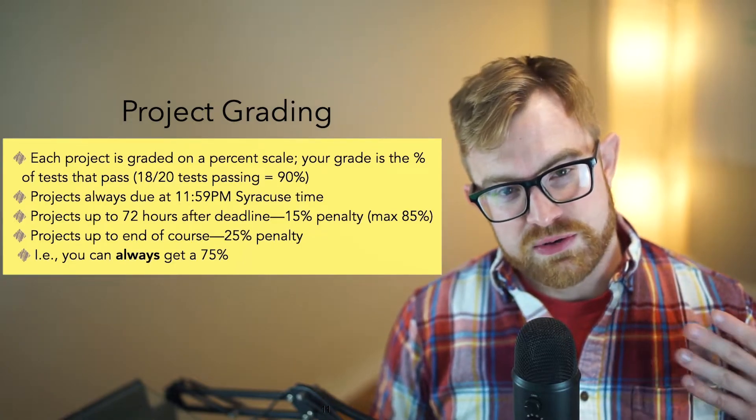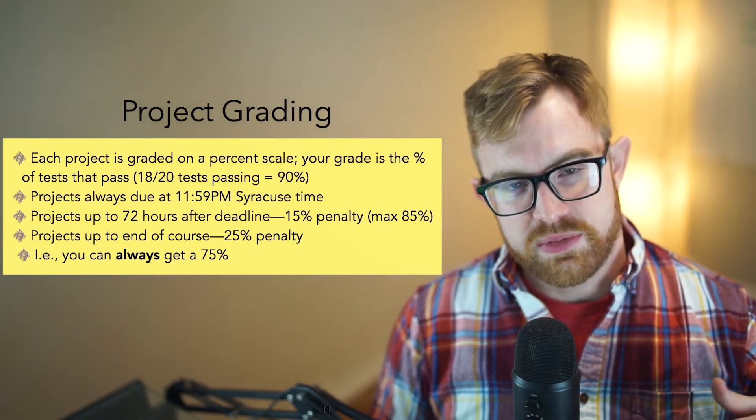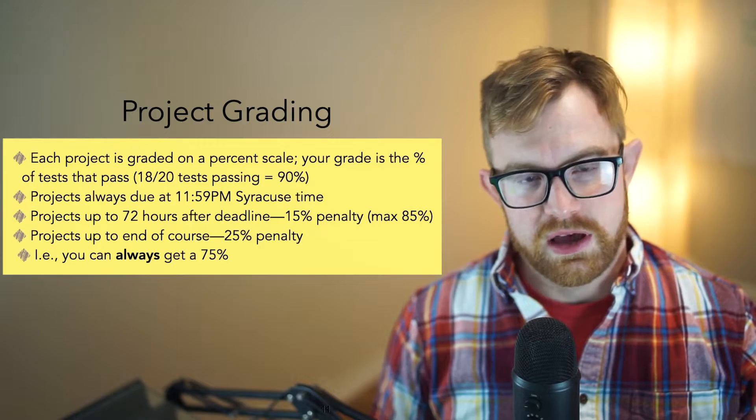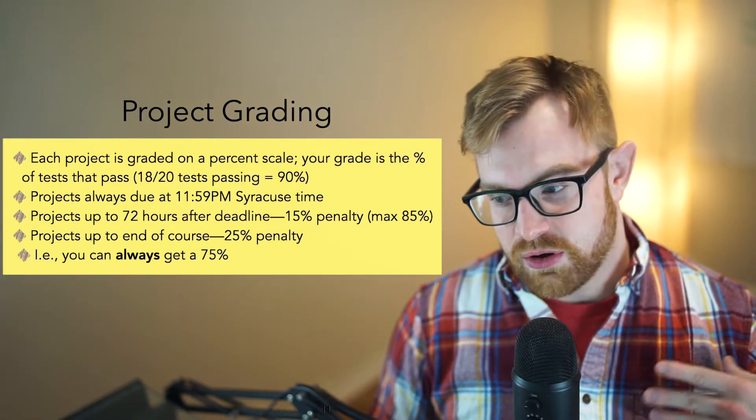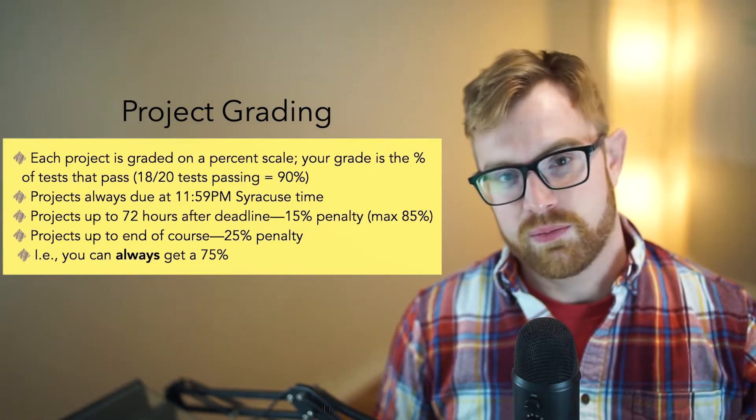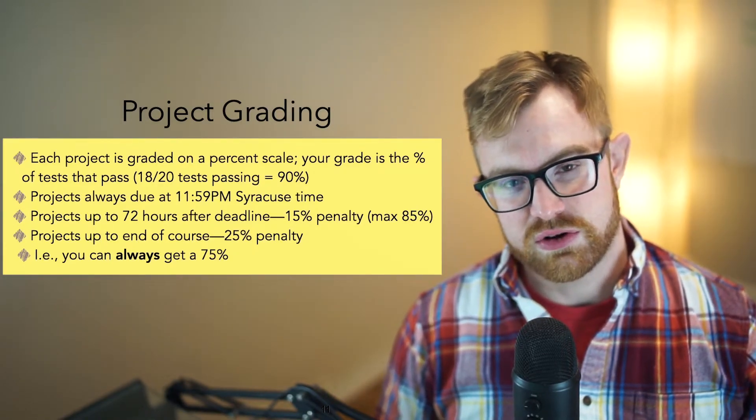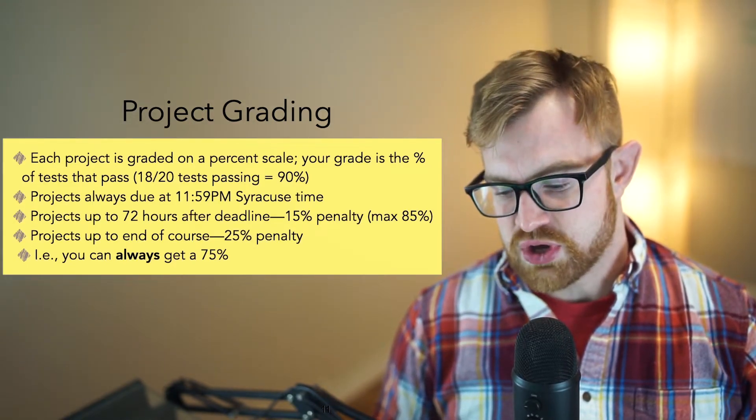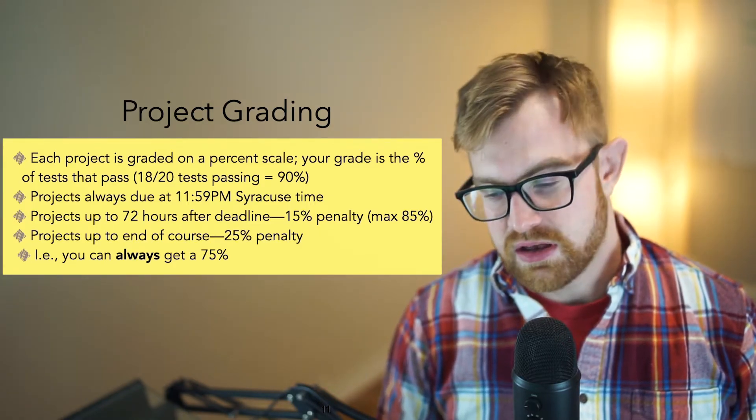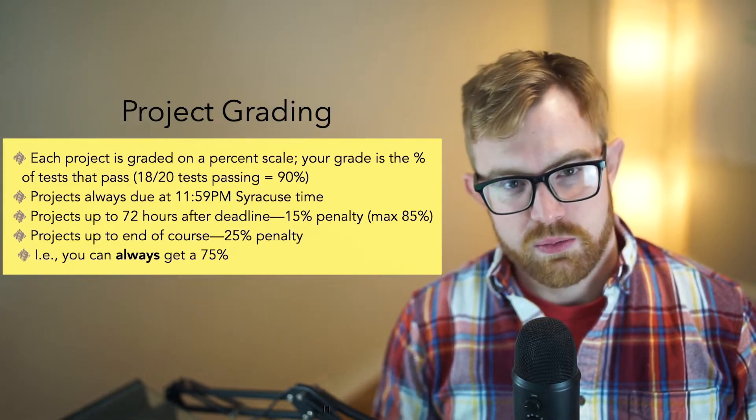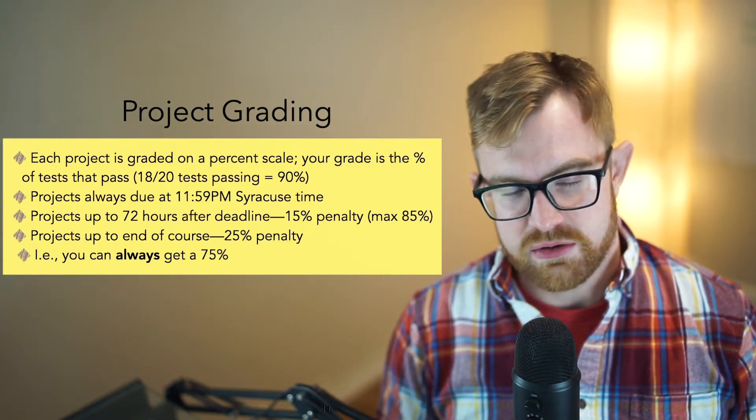Up to 72 hours past the project's normal deadline, you can turn in the project and you'll get a 15% penalty. So whatever grade you get will get multiplied by 0.85. And then up to the end of the course, you'll get a 25% penalty on whatever project you turn in. So you should always be able to get a 75% on some project, even if you turn it in extra late. And so there should be some ability to bring your grade up in the projects, even if you do get a little bit behind. But it is also very important that you stay on top of things because projects cumulatively build on each other. And I've noticed in the past that pacing is very important for students as they go through the course.